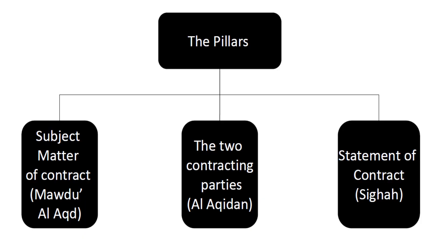There are three major pillars, elements, or components of the contract. The first is the contracting parties — or the two contracting parties, though a contract may involve two, three, or more. In Arabic they are known as al-aqidayn. In the case of a sales contract, which is the typical example we use, these are the buyer and the seller.